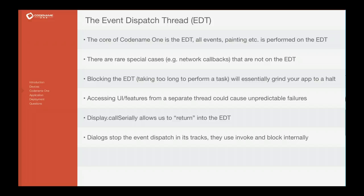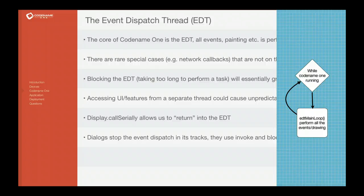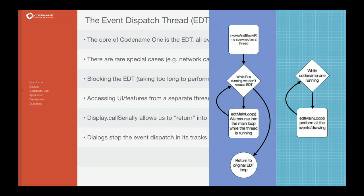To understand this, let's go over what the EDT is in Codename One. Codename One internally — and you'll never technically see this code without opening Codename One's source — in Display.java you'd actually see a while loop where, while Codename One is running, it invokes a method called edt main loop. You can actually search the code and see that. This is essentially how it looks: it's in a sort of infinite loop where we invoke the edt main loop.